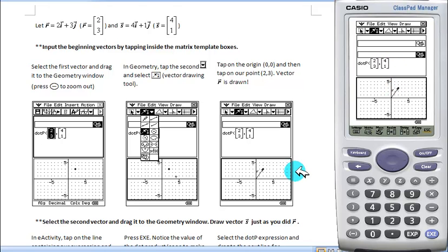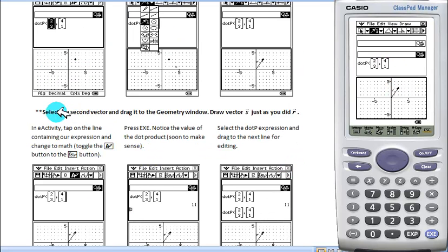Similarly, we can do this with 4, 1, which is what they ask us to do here. And draw the vector. Great.